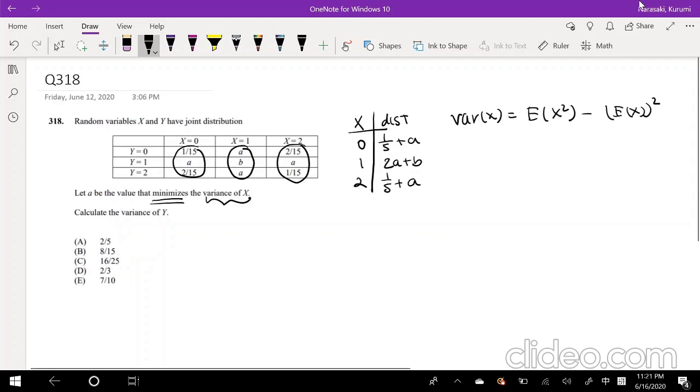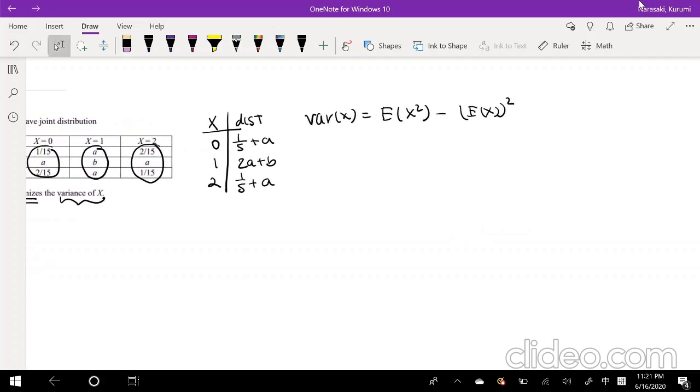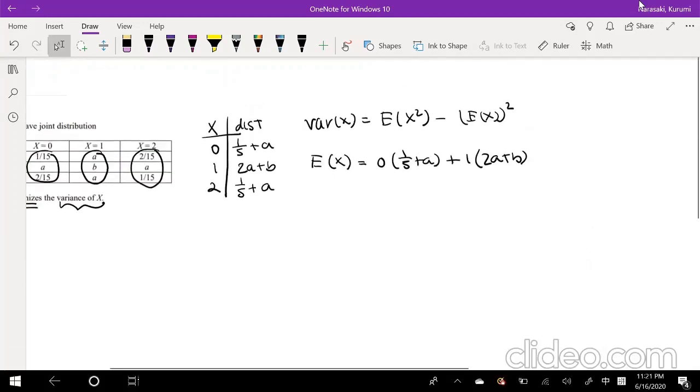So let's just find E(X²) and E(X), the whole thing squared. So we can say the E of, I think the expectation is a little bit easier to find. So we're going to find that first. So that's equal to 0 times 1 over 5 plus a, plus 1 times 2a plus b, okay.